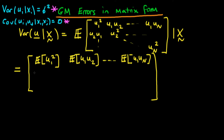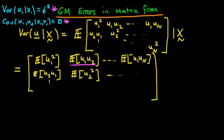If we move to the second row, the first component is just the expectation of u2 times u1 given x, and we can see straight away that that's actually the same thing as the expression above, because it doesn't matter whether I multiply u2 times u1 or the other way around — they're both exactly the same since both are scalars. The second component is the expectation of u2 squared given x, and we could continue to fill out that row and columns. The last component in the last row is the expectation of u_n squared given x.